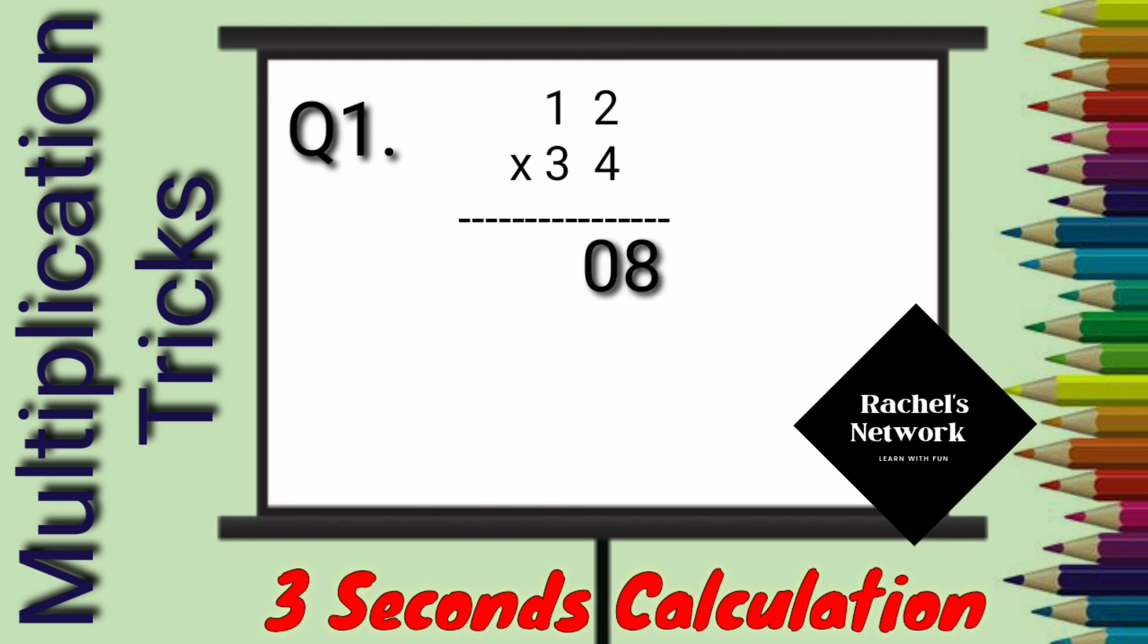Then, when we multiply 3 and 1, we get 3, which we will write as 03. Now, cross multiply this 3 and 2 and 4 and 1. Whatever answer we are getting, we have to add them both. That is, 4 x 1 is 4 and 3 x 2 is 6. So, what is 6 plus 4? Correct, 10. And this is a two-digit number.